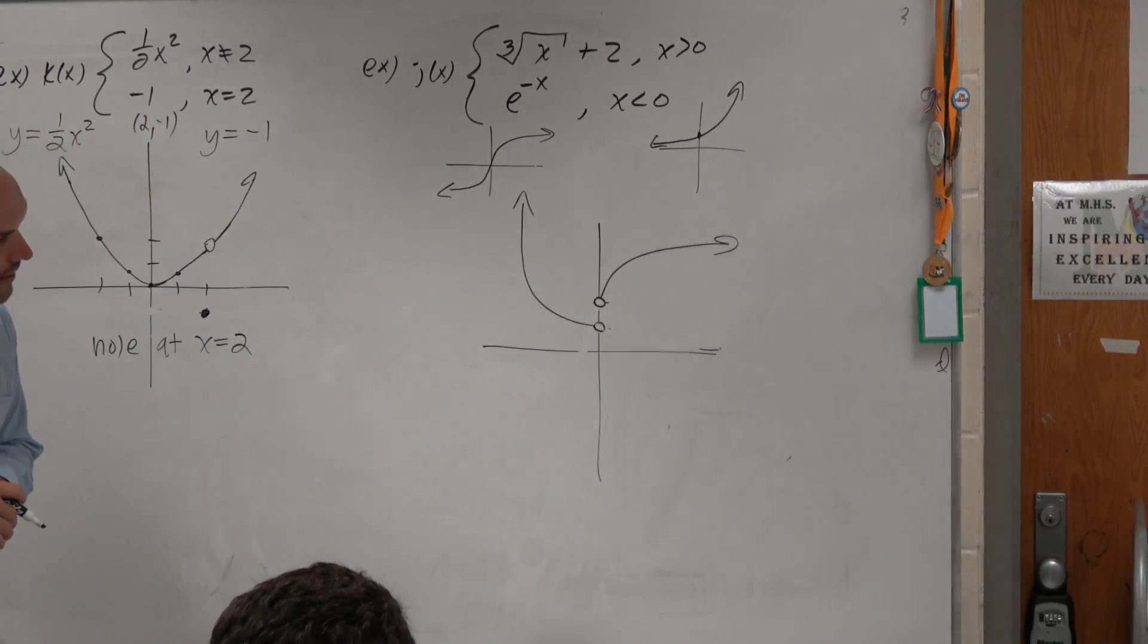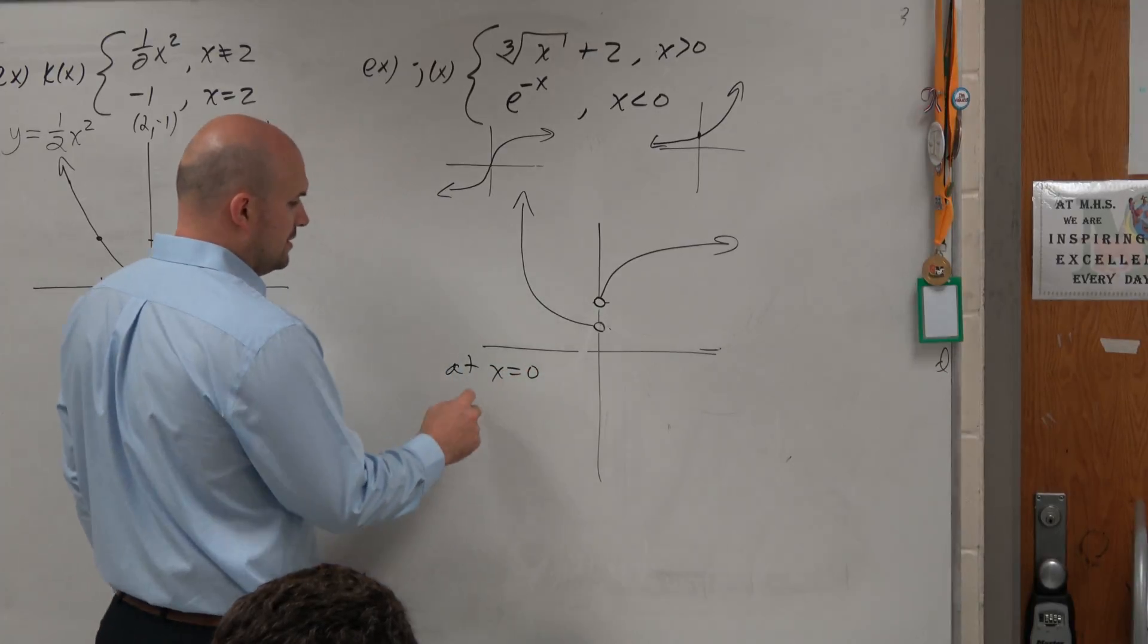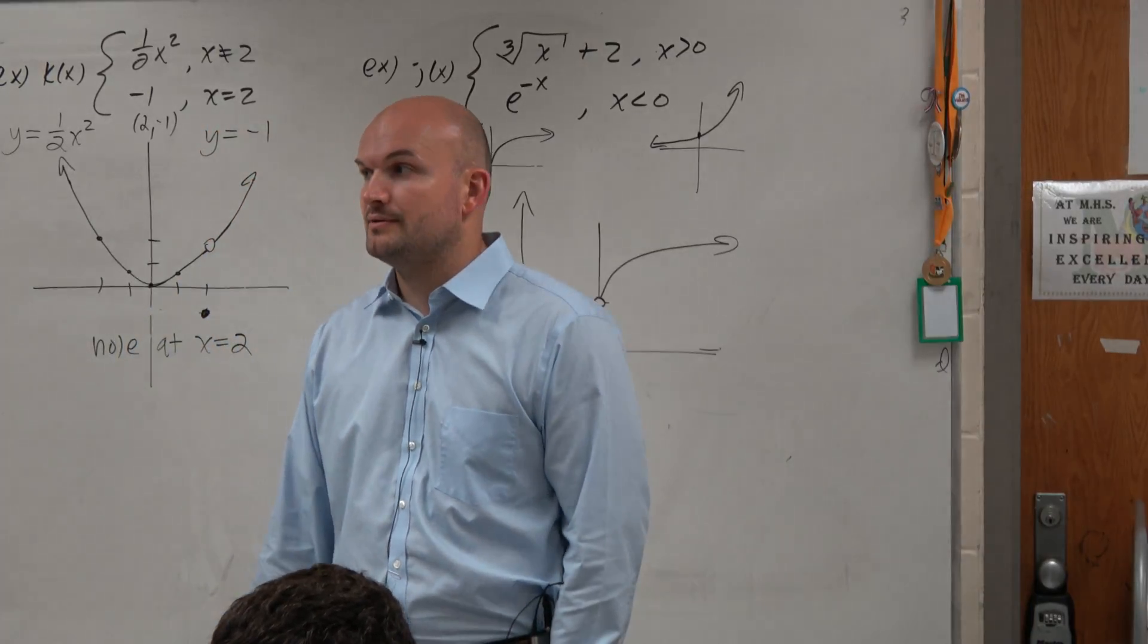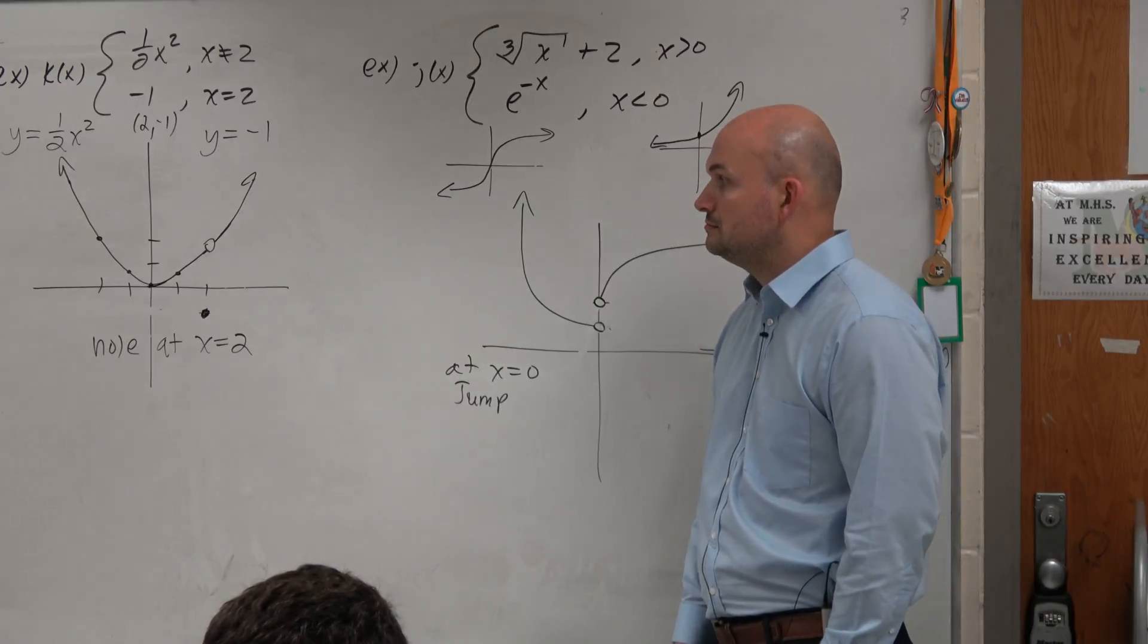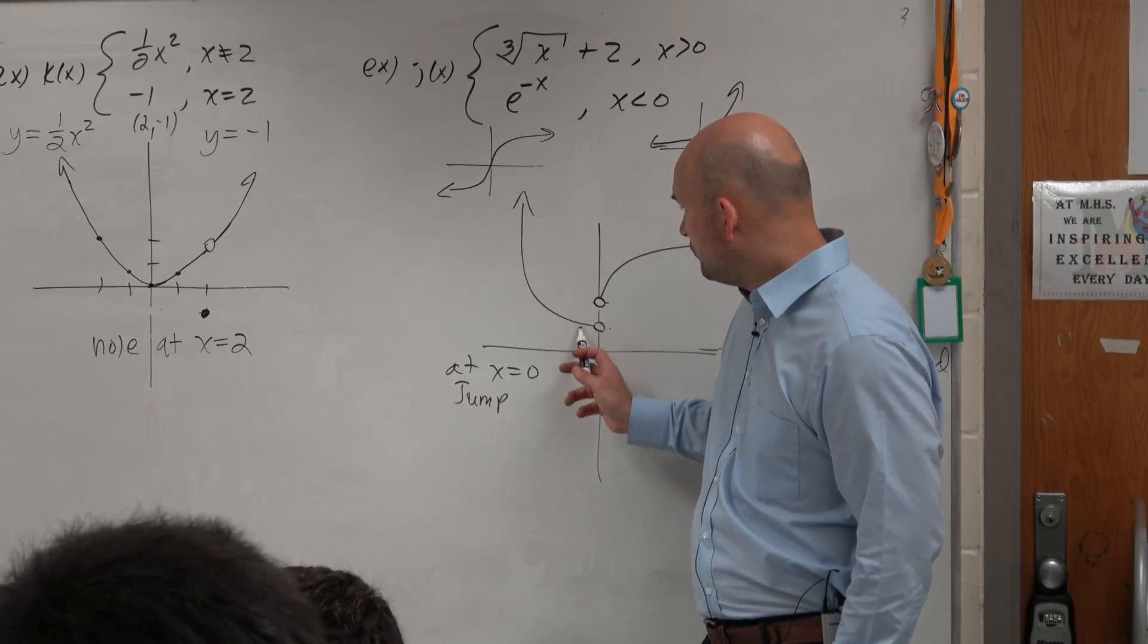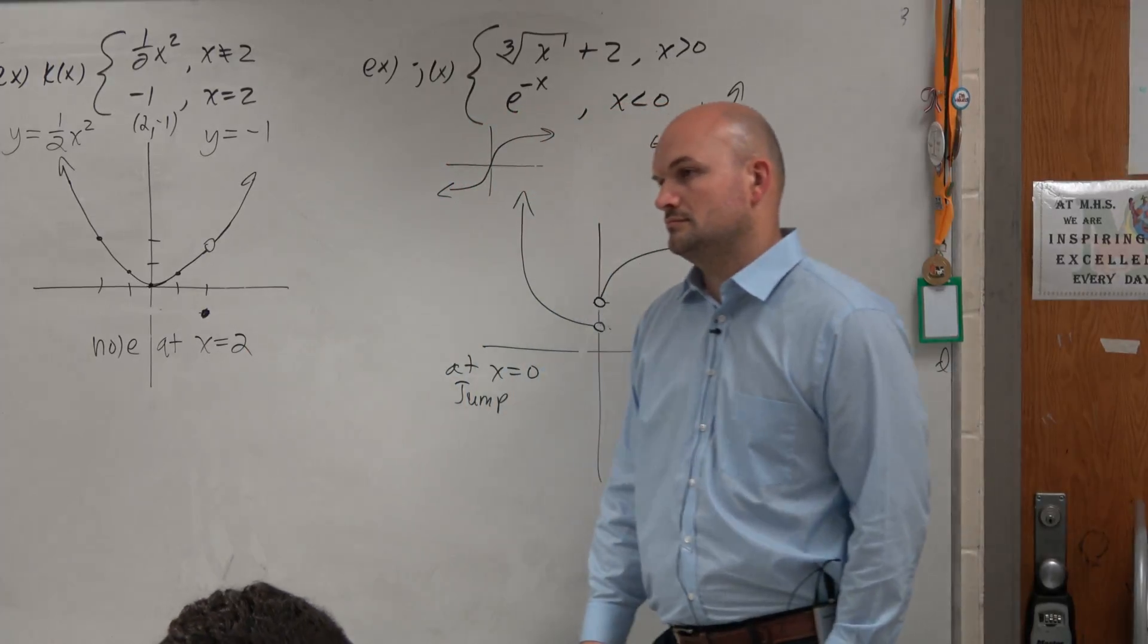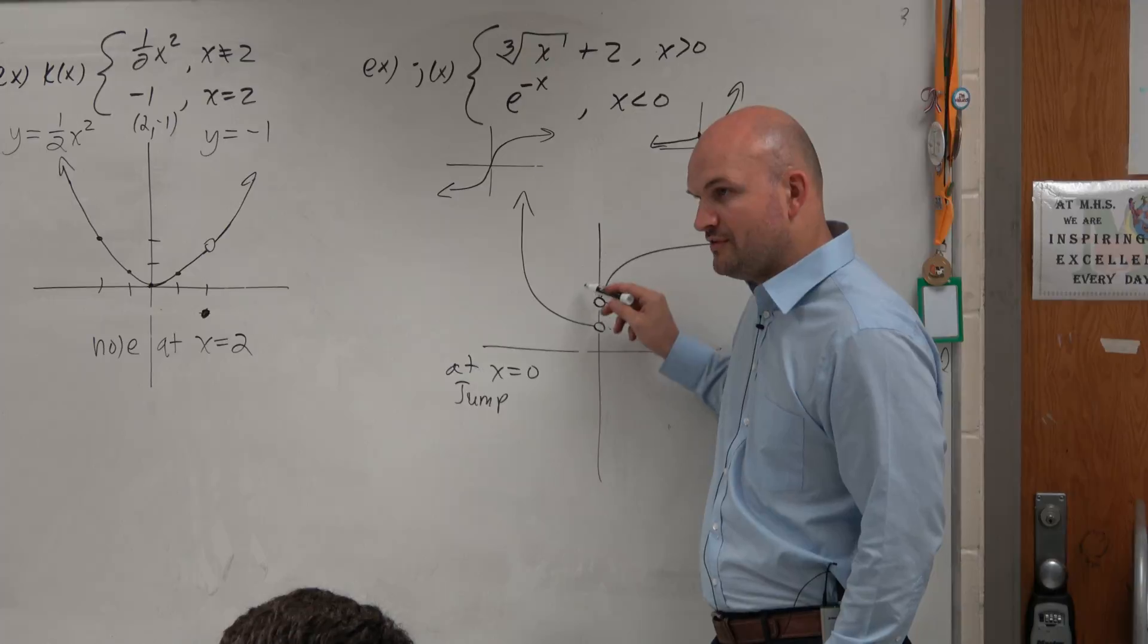So now you guys can see that at x equals 0, there is a jump discontinuity, or a non-removable discontinuity. Because you're jumping from one function to the next. Here, it's the same function. There's just a hole in the graph. So you're jumping from one to the next. So there's a gap between the functions.